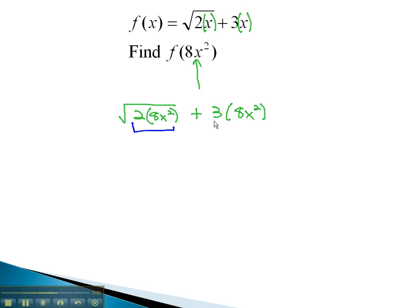Multiplying what we end up with, we end up with the square root of 16x squared plus 24x squared. You may notice we can take the square root of 16, which is 4, and the square root of x squared, which is just x. And with nothing left in the radical, we have 4x plus 24x squared.